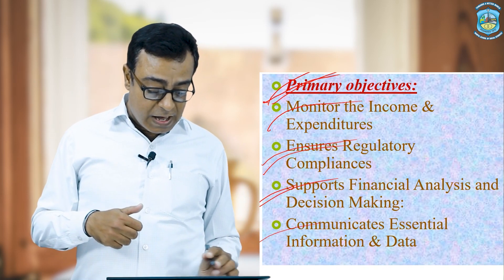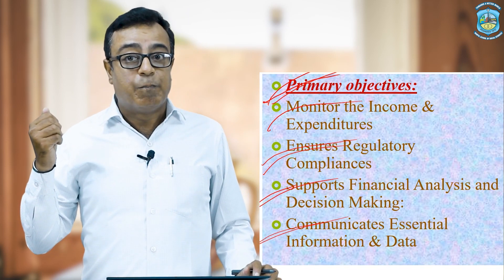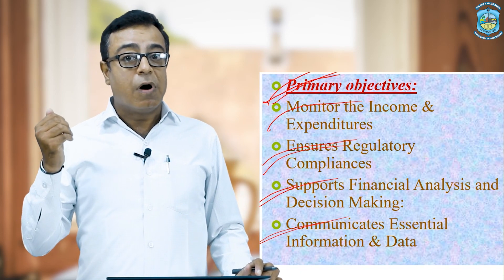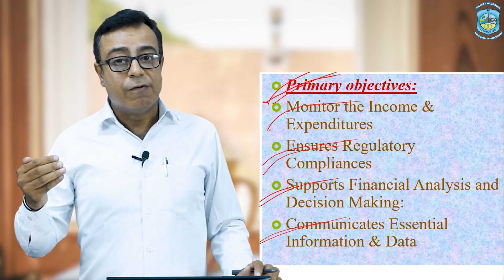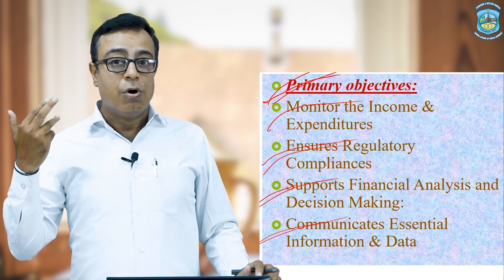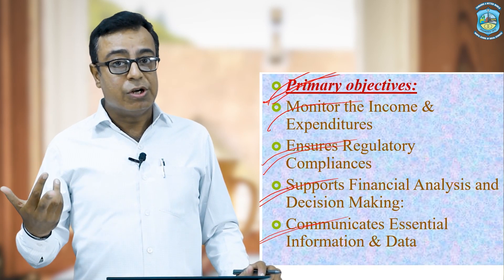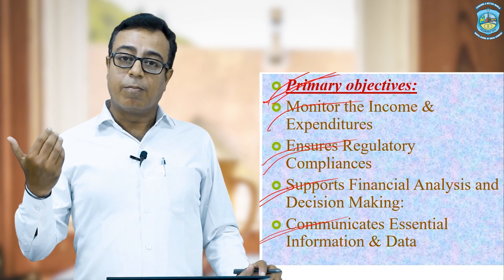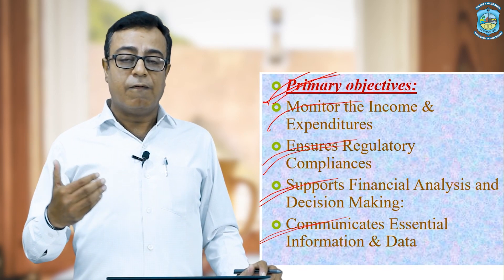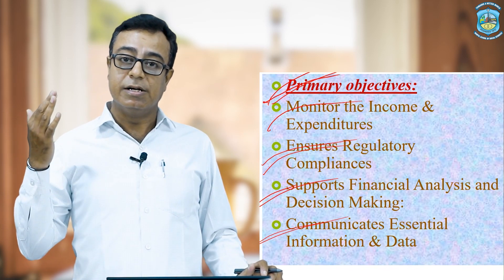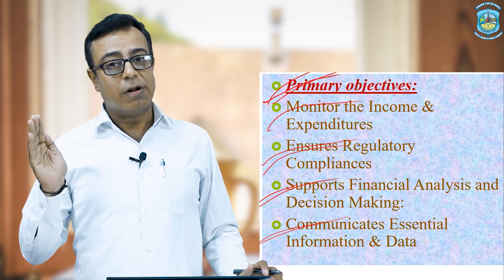The last primary objective is communicating essential information and data. The preparation of corporate financial reporting is for communicating all information to the stakeholders. Providing and communicating all information to stakeholders is a main objective of corporate financial reporting. Without such communication, there would be many rumors about companies, but this reporting allows the company to clarify rumors and present all facts.